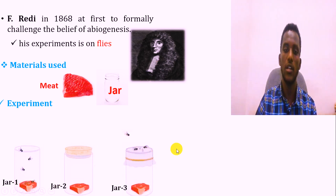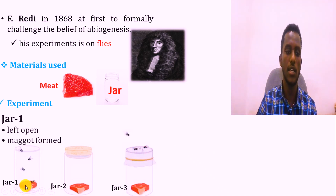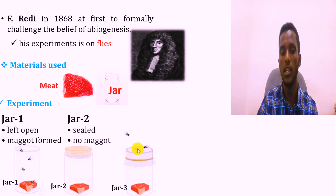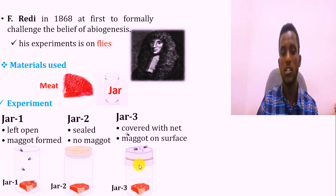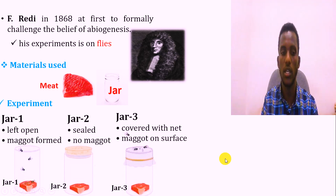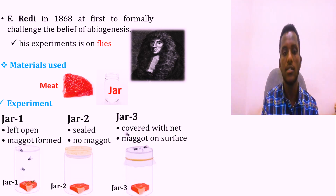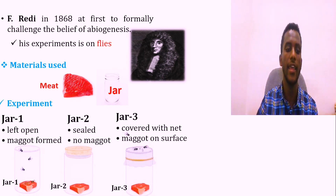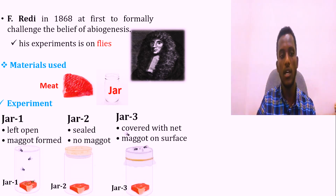After the incubation period, he observed maggot formation in the open jar. In the case of the sealed jar, there was no maggot formation. He concluded that the maggots in the open jar came from flies that landed on the surface of the meat.